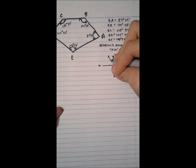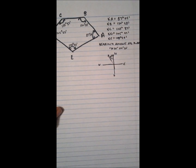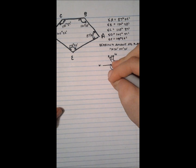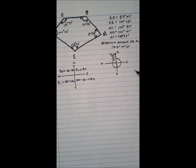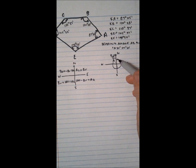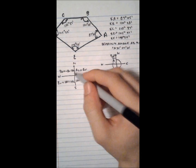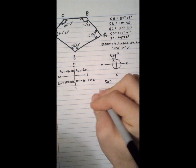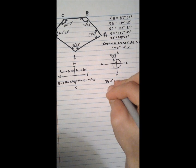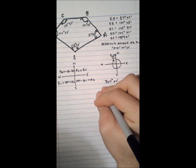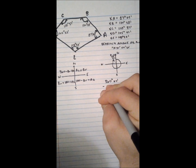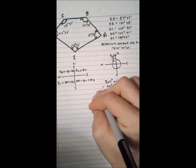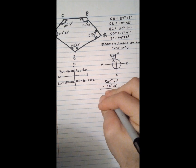That's our 30 degrees, and the azimuth is this angle all the way around here. So we're just going to do 360 degrees 0 minutes minus 30 degrees 0 minutes, which equals 330 degrees and 0 minutes.